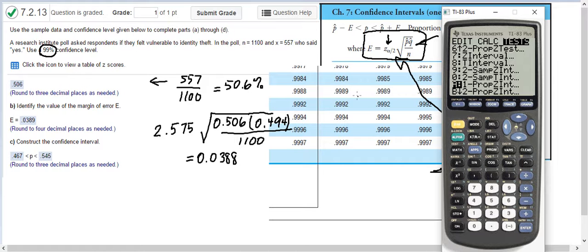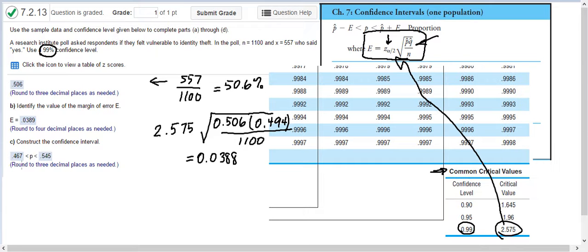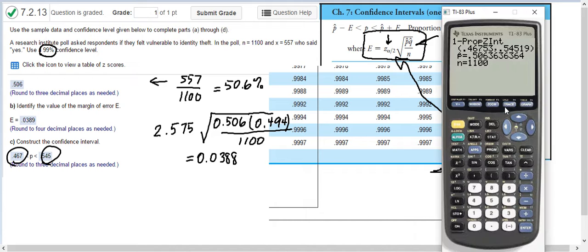Just for reference, the other two confidence intervals that we're here, one of those is z and one of them is t, depending on whether sigma is known or unknown. But here, you just put in your x and our x was 557. Our n is 1100. And our confidence level, instead of .95, which is what it defaults to, we were .99. And so with that, you get this confidence interval number. Alright, 467 and 545 are given to you here. And that's where those numbers come from.